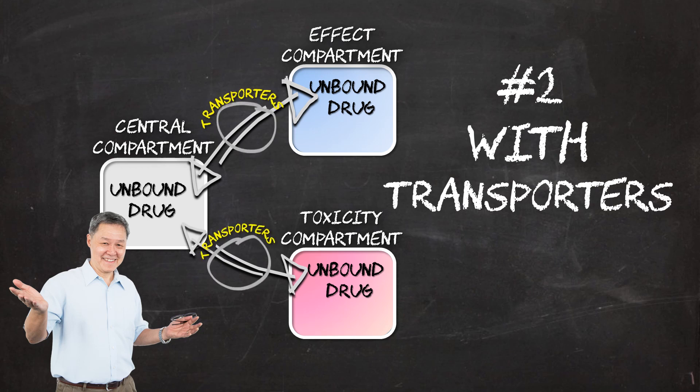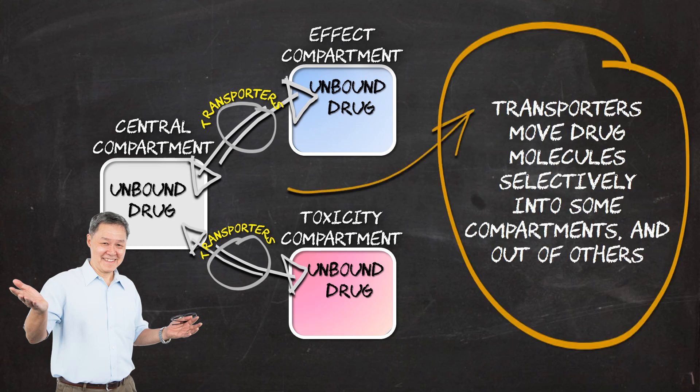The second model takes into consideration the action of drug transporters which are expressed on the membranes of various cells and tissue compartments. Because the expression of these transporters is unique for every membrane and differentially expressed across various tissue compartments, drug transporters have the potential of moving drug molecules selectively into certain compartments and not others. Therefore, the concentrations of unbound drug observed in the central compartment may not adequately explain the concentrations in the effect compartment or in the toxicity compartment.